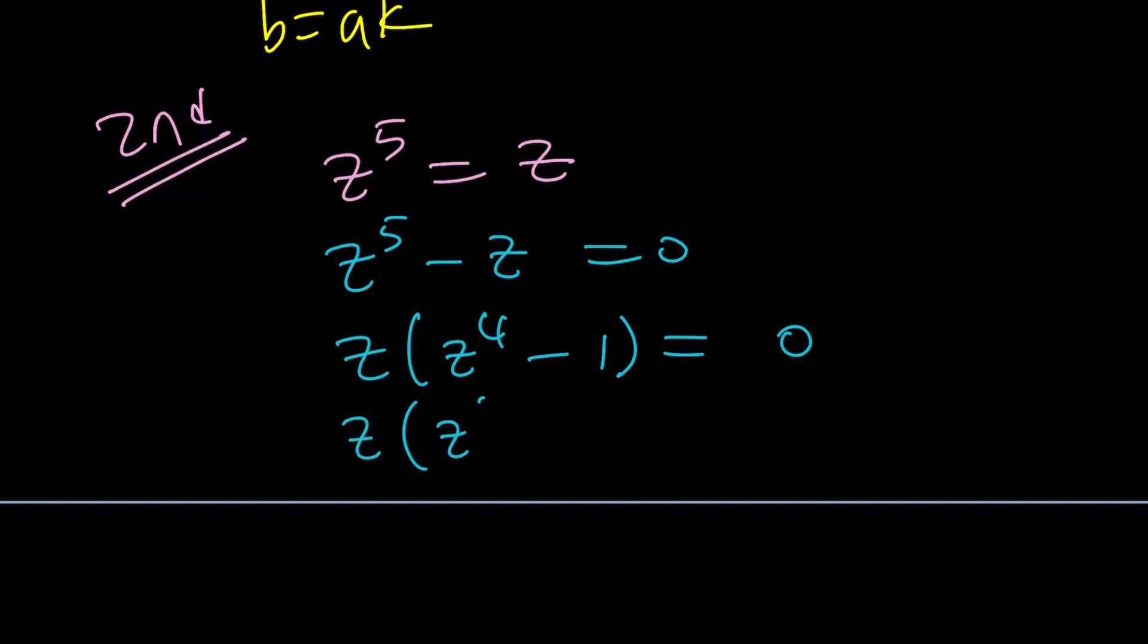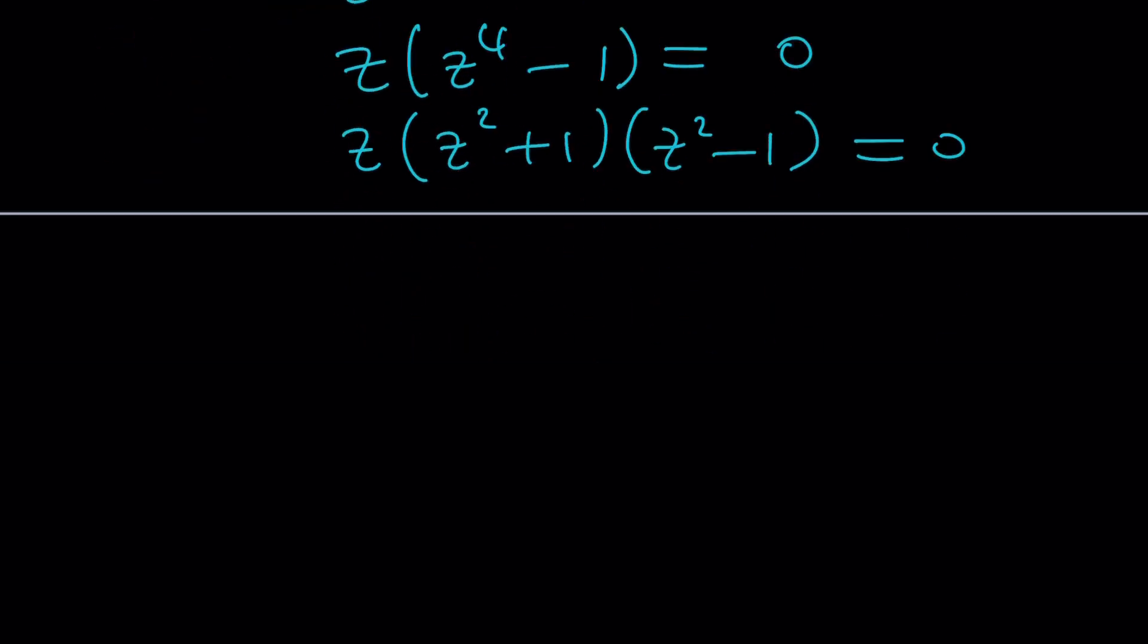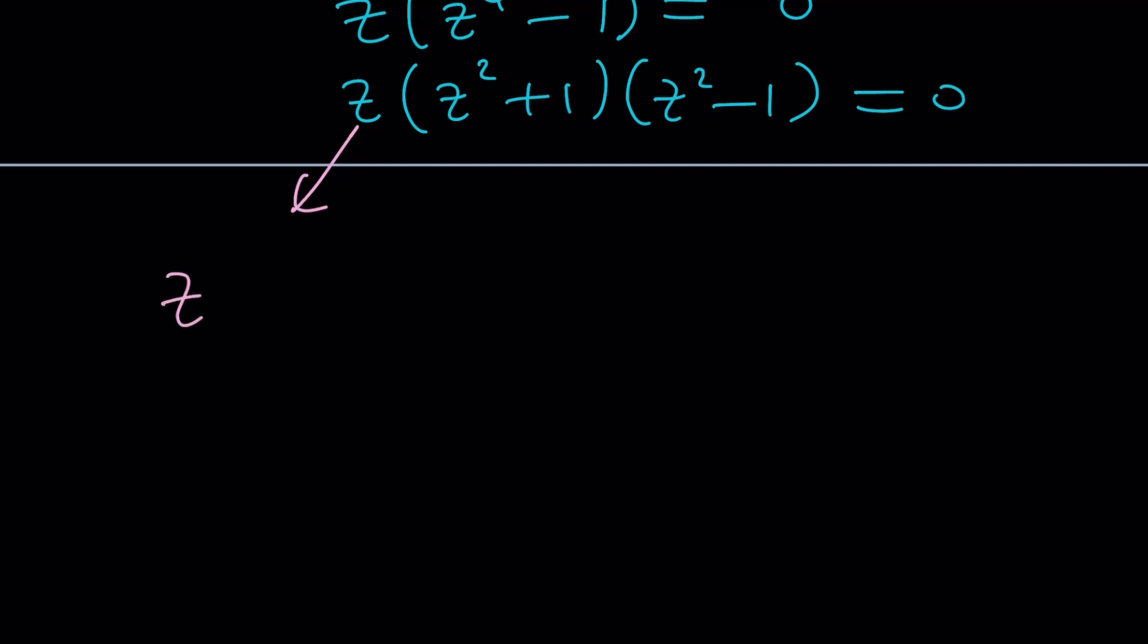Of course, this is a difference of two squares. And that gives us two easily solvable quadratics. Come on. What are you talking about? Z equals 0. Z squared equals negative 1 gives us z equals plus minus i. This gives us z equals plus minus 1. In other words, the square roots of 1, the square roots of negative 1, and the square root of 0. 0 has 1 square root. That's the only exception. And this brings us to the end of this video.